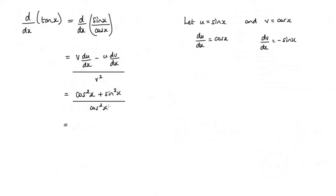Now cos squared x plus sin squared x, well that's equal to 1. So it's 1 over cos squared x, which is actually sec squared x.